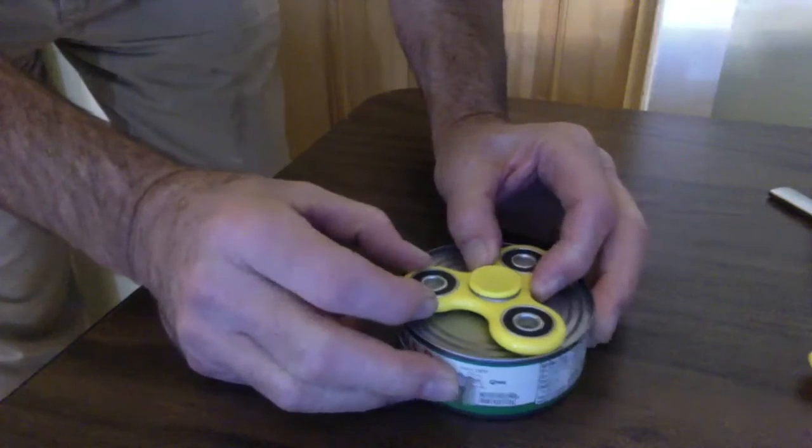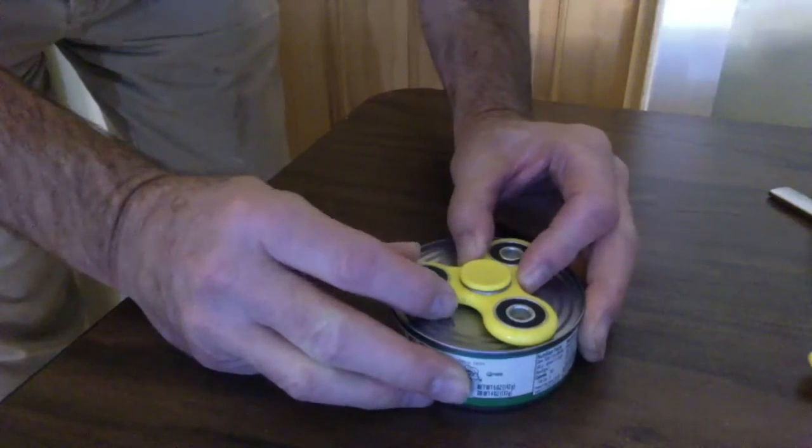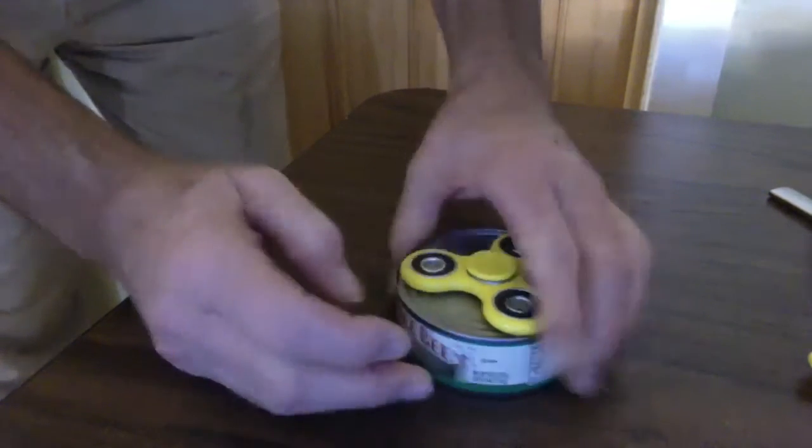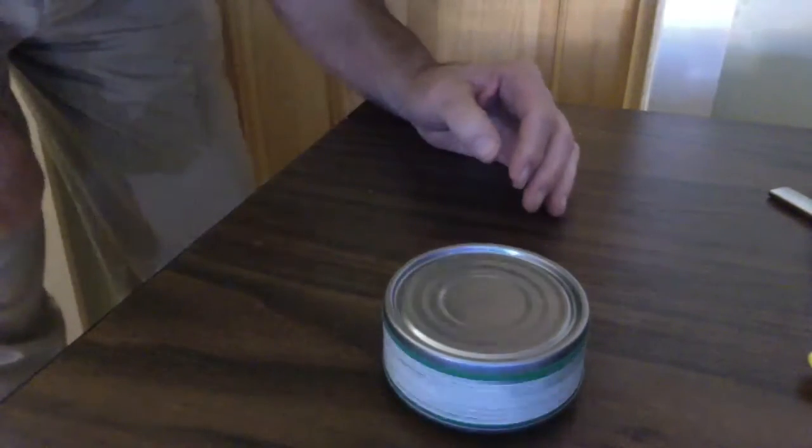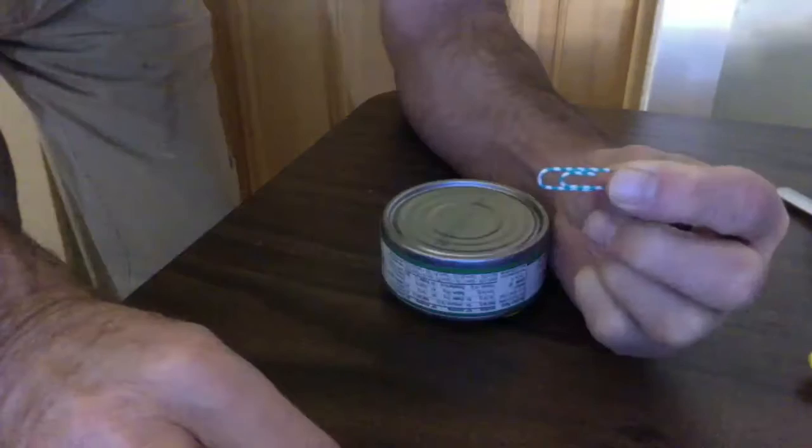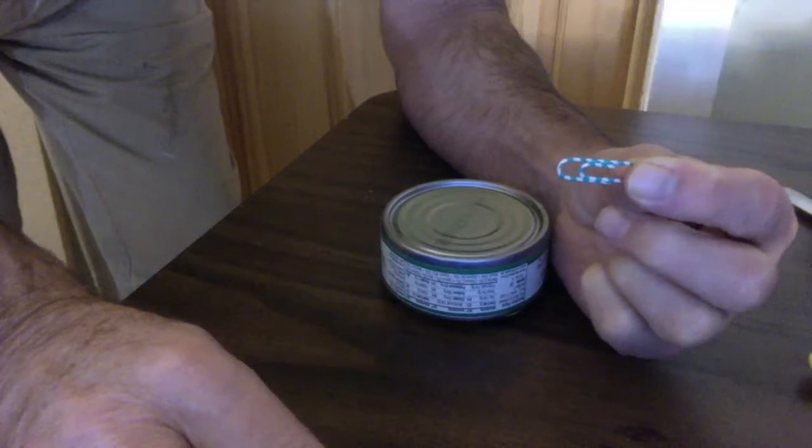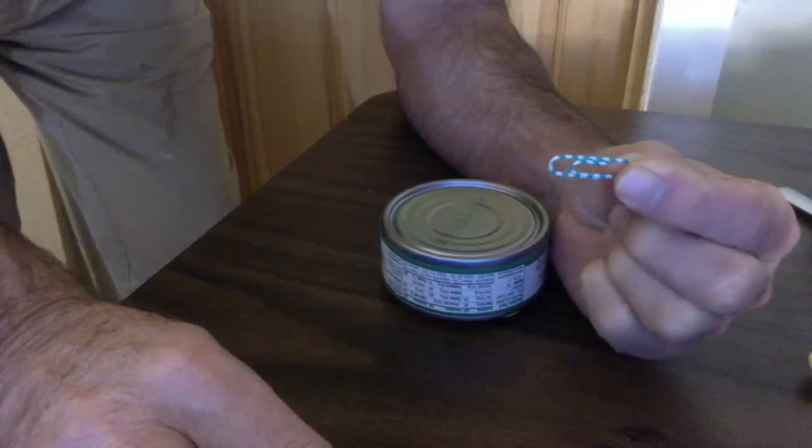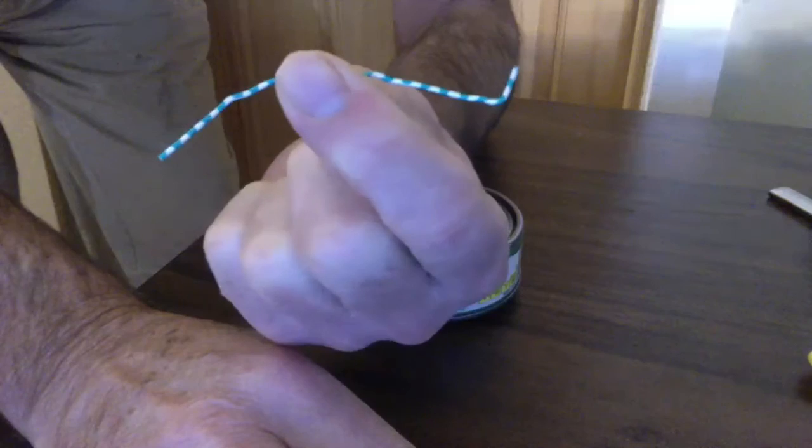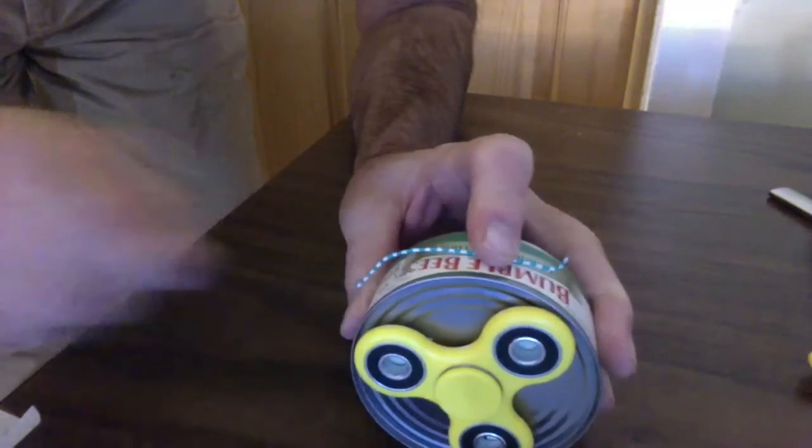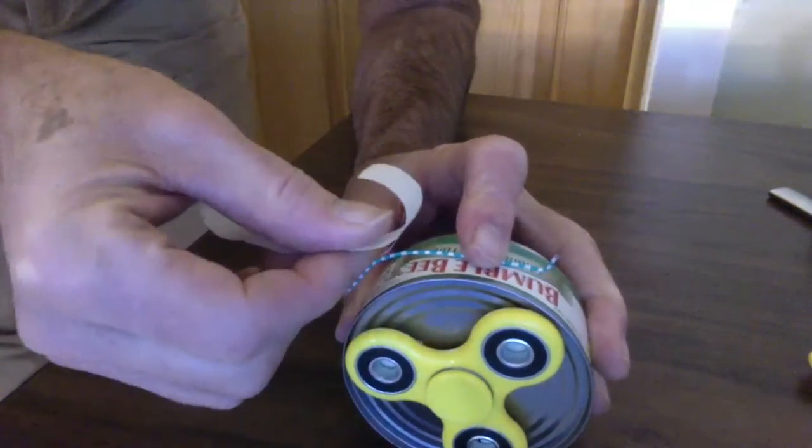Let's see how we did - pretty good. Now we need to make a tab to hold the string on and we're going to use the paper clip. That's about right. You lay it right on the edge of the can and then apply the tape.